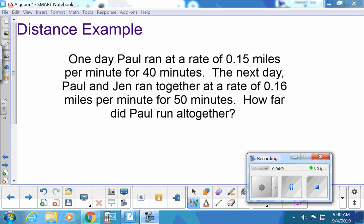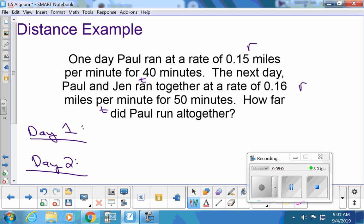All right, we're doing another distance example. Paul is running at the rate of 0.15 miles per minute. That's a rate for 40 minutes. That's a time. Normally we want to stick that in the... Okay, it's a rate per minute, so it is in minutes. I always think rates are in miles per hour and you want it in hours. But we're in minutes. That's unique. The next day, Paul and Jen ran together at a rate of 0.16 miles per minute for 50 minutes. So that's another rate and another time. We're going to do these calculations separate. We're going to do our day one calculations to figure out how far Paul went. And then we'll do our day two calculations to see how far Paul and Jen went together. And we'll add them up at the end.